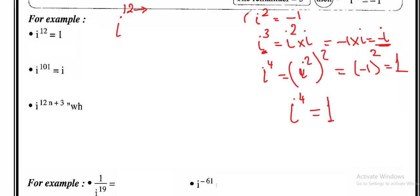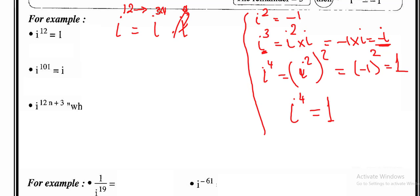Now I will use this to find i¹². I want to express 12 as a multiple of 4: 12 = 3 × 4, so i¹² = (i⁴)³ = 1³ = 1. There is no remainder. So i¹² = 1. Why? Because 12 is a multiple of 4.